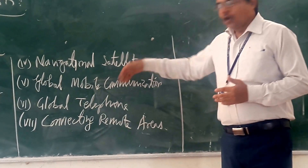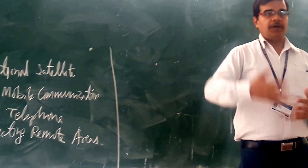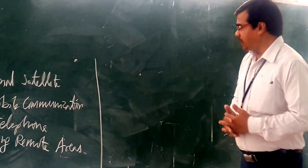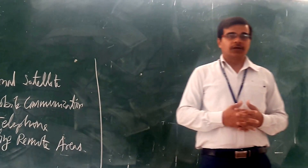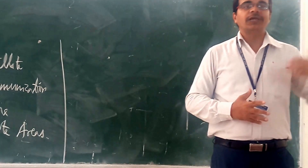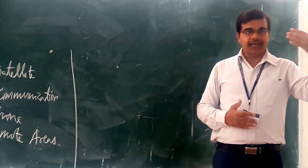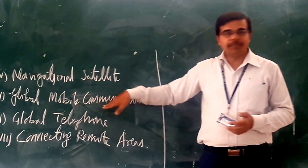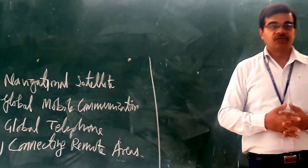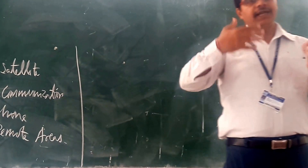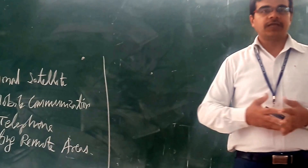The next application is global mobile communication. As we know, we use mobile phones for communication, and for that we have to install towers. But practically it is not possible to install towers in remote places where the population is less, as it will not be commercially viable for mobile companies. For those areas, we can take the help of geosynchronous satellites, and three geosynchronous satellites can cover the entire Earth for communication.